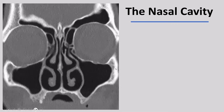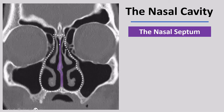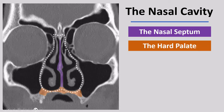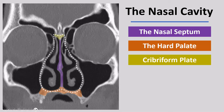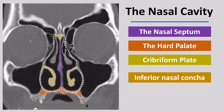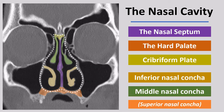Let's now discuss the anatomy of the nasal cavity. The nasal cavity is divided in two parts by the nasal septum, which has a bony part and a cartilaginous part. The hard palate forms the inferior surface of the nasal cavity. The top is formed centrally by the cribriform plate, and laterally by the fovea ethmoidalis, which borders the superior aspect of the ethmoid cells. There are several shell-like structures in the nasal cavity called concha or turbinates: the inferior nasal concha, the middle nasal concha, and the superior nasal concha, which is not visible on this image.